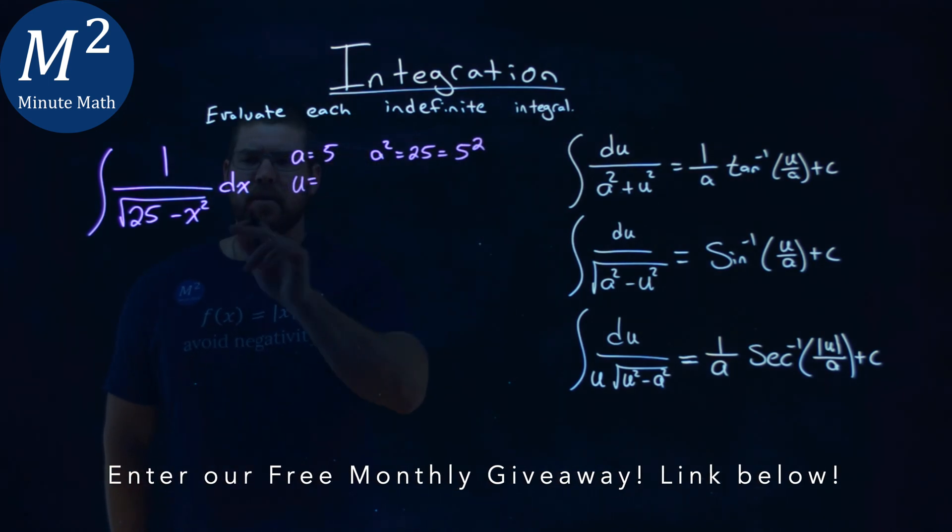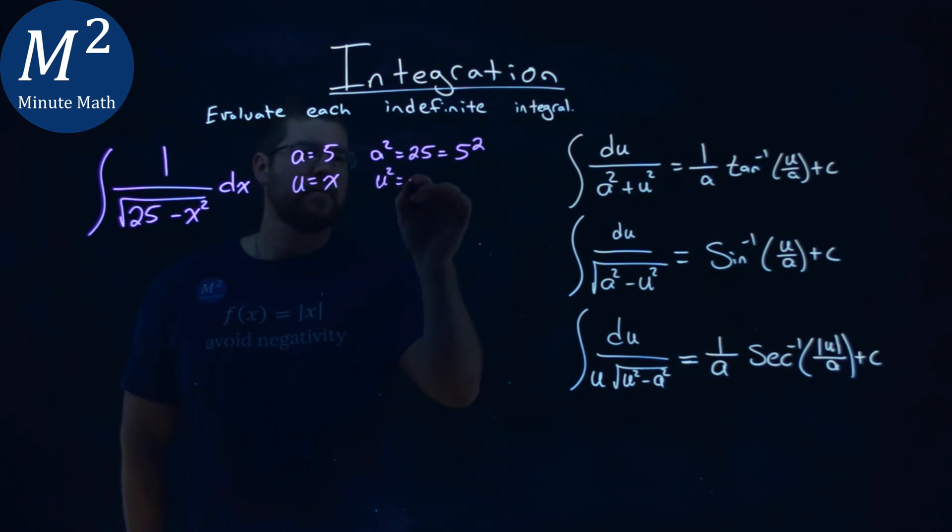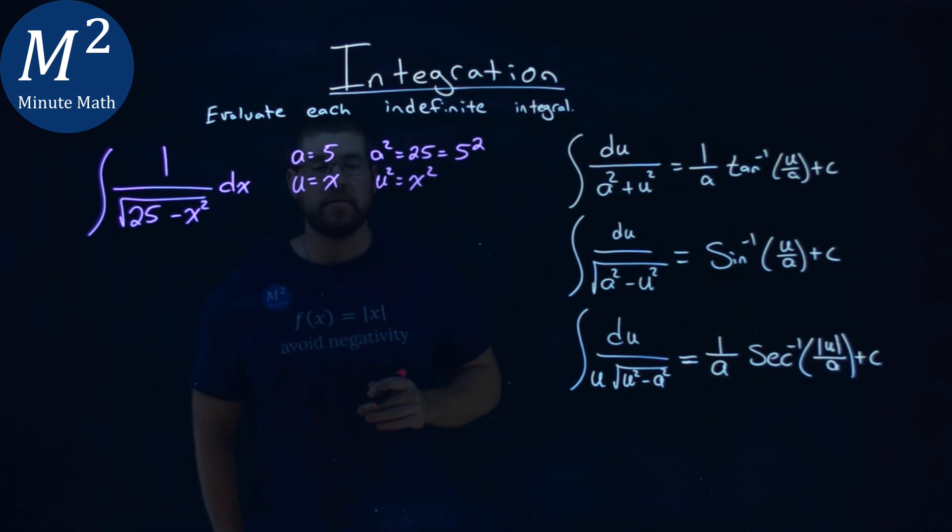Our u value is pretty easy here. If we just set it to be x, our u squared is x squared. Not too difficult to find.